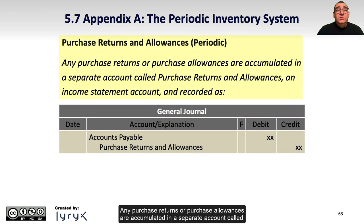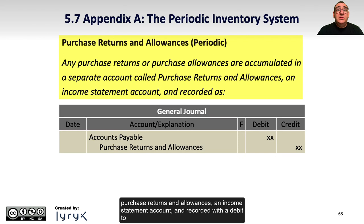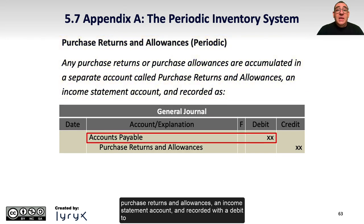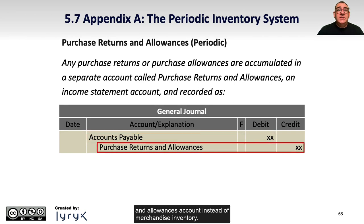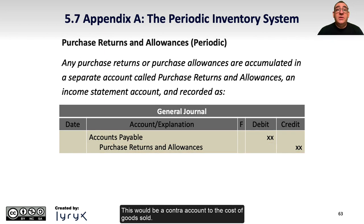Any purchase returns or purchase allowances are accumulated in a separate account called purchase returns and allowances, an income statement account. They are recorded with a debit to accounts payable and a credit to a purchase returns and allowances account instead of merchandise inventory. This would be a contra account to the cost of goods sold.